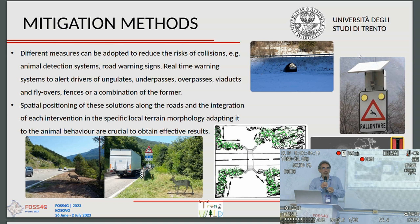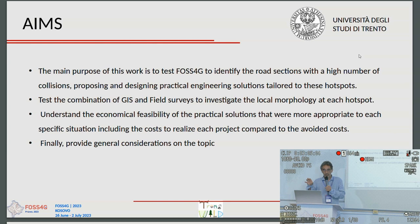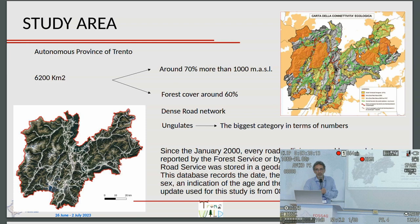The main purpose of this work is to use GIS to identify road sections with a high number of collisions and propose practical engineering solutions tailored to these hotspots. We test the combination of GIS and field surveys to investigate local morphology at each hotspot, understand the economic feasibility of practical solutions including costs, compare costs to avoided costs, and provide general considerations on the topic.